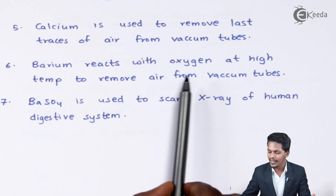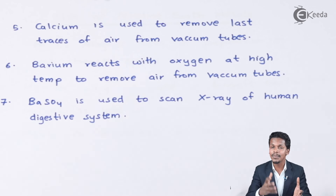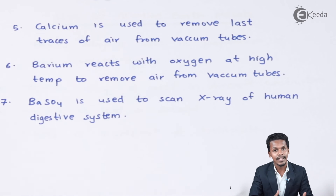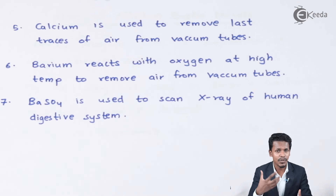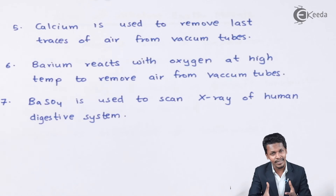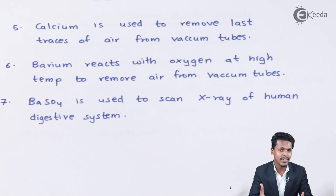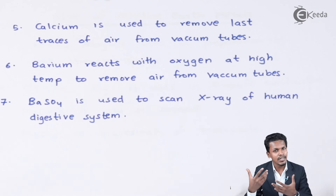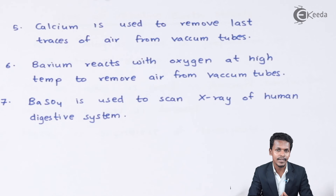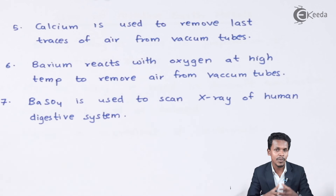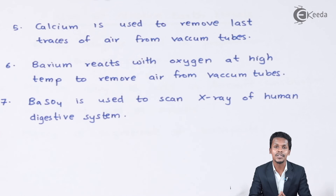Similarly, barium also reacts with oxygen at high temperatures and is used to remove air from vacuum tubes. Even after physically evacuating a tube, trace amounts of air containing oxygen or nitrogen can remain and react with chemicals inside, causing deflections in experimental readings. Therefore, both barium and calcium are used to remove residual oxygen and nitrogen from vacuum tubes.